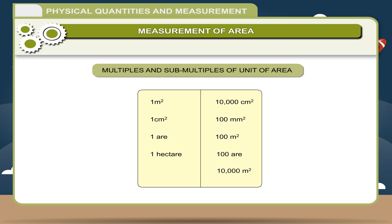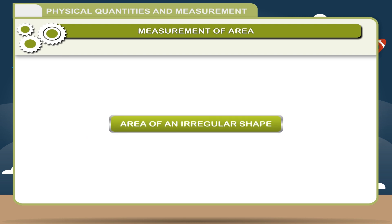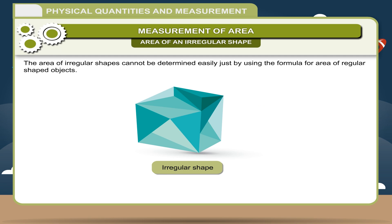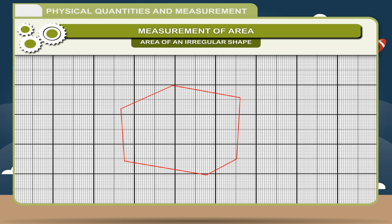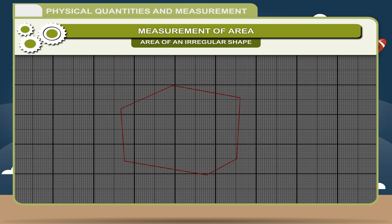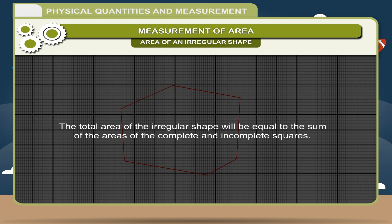Area of an irregular shape. The area of an irregular shape cannot be determined easily just by using the formula for area of regular shaped objects. The areas of such shapes can be found by using graph paper. We put the object of irregular surface on the graph paper and mark its outline with the help of a sharp pencil. Then we count the number of complete and incomplete squares. The area of incomplete squares is approximated to be the half of area of complete square. The total area of the irregular shape will be equal to the sum of the areas of the complete and incomplete squares.